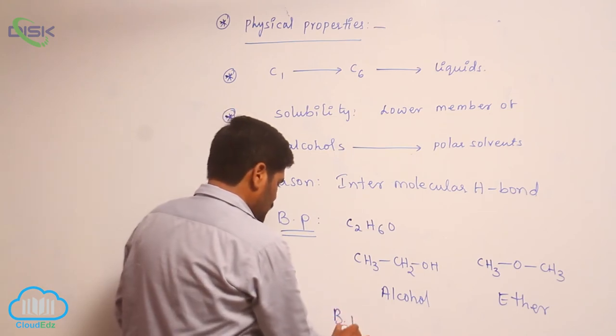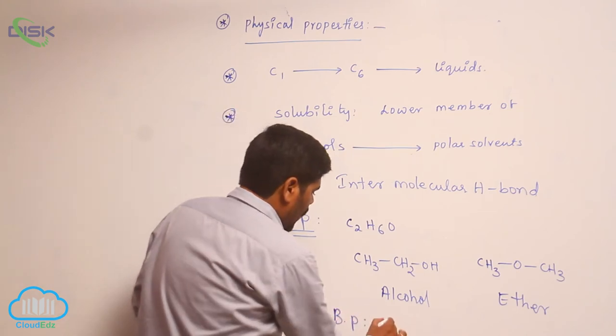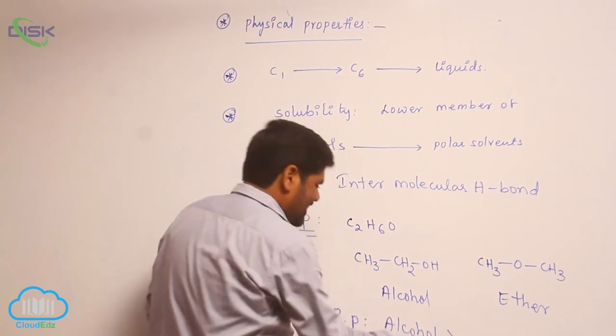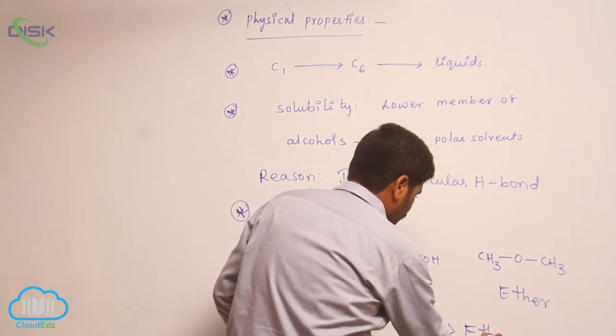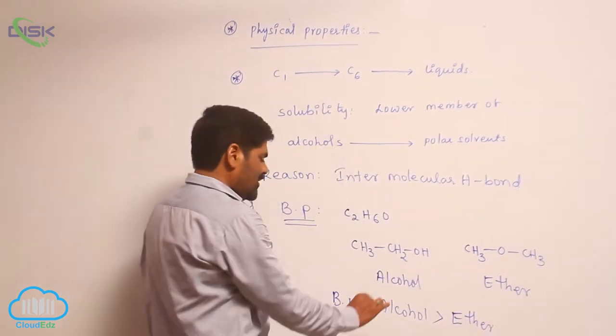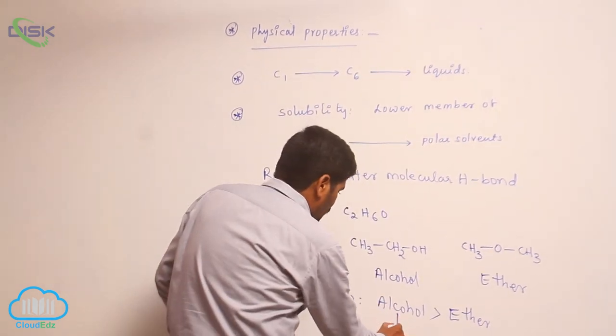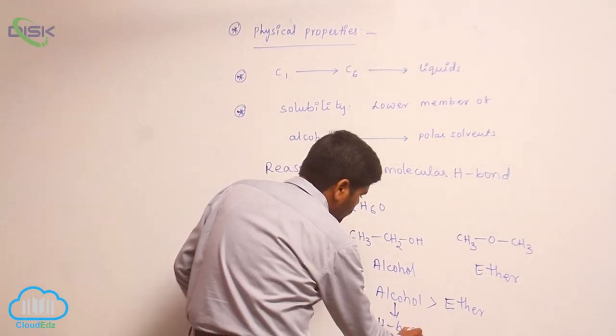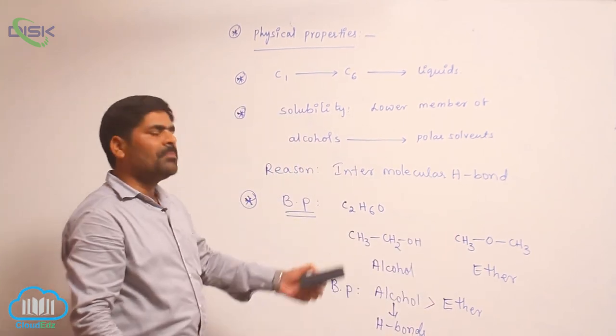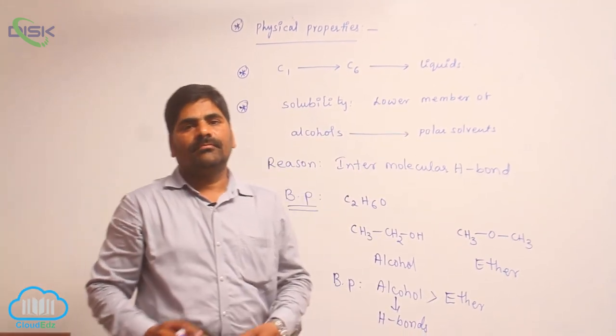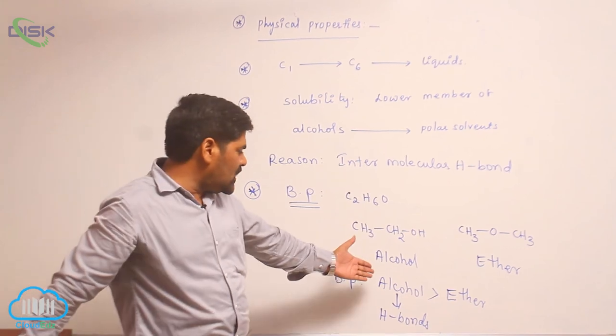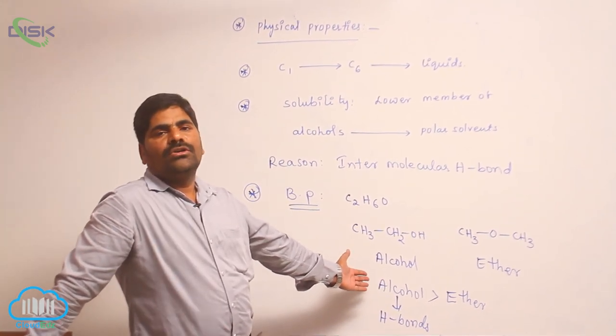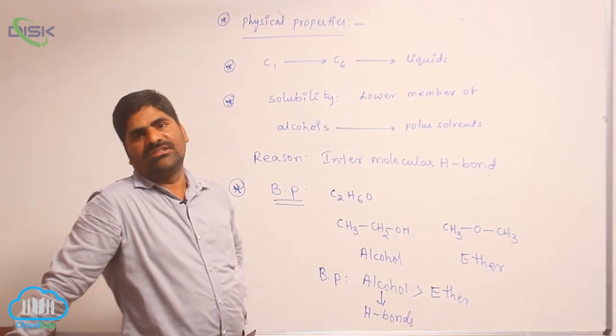Boiling point of alcohol is always greater than that of ether. The reason is it forms hydrogen bonds. Due to hydrogen bonds, association capacity increases. Therefore, alcohols show high boiling points compared to ethers.